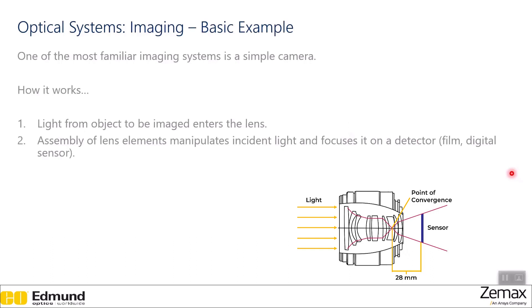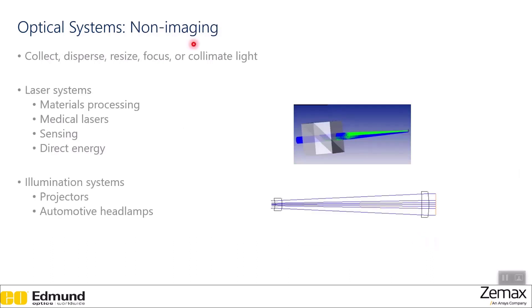Non-imaging systems are going to either collect, disperse, resize, focus, or collimate light. There are two different types of non-imaging systems. We have laser systems, with examples including materials processing, medical lasers, sensing, and directed energy. We also have illumination systems, which include projectors and automotive headlamps.